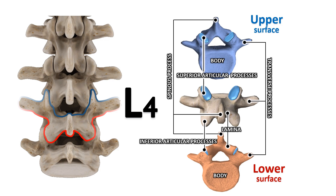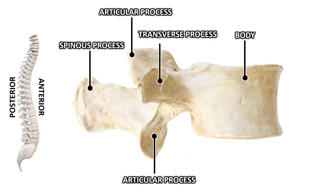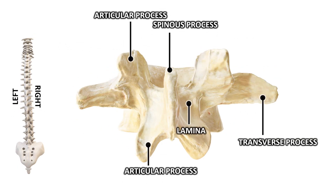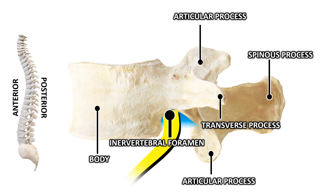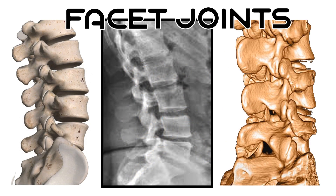In the lumbar region, the anatomical processes of the vertebrae vary in shape and will therefore condition different sonographic acoustic shadows. The laminae are broad, short, and strong. The spinous process is thick and extends posteriorly and horizontally. The superior and inferior articular processes are well defined, projecting respectively upward and downward from the junctions of the pedicles and laminae.